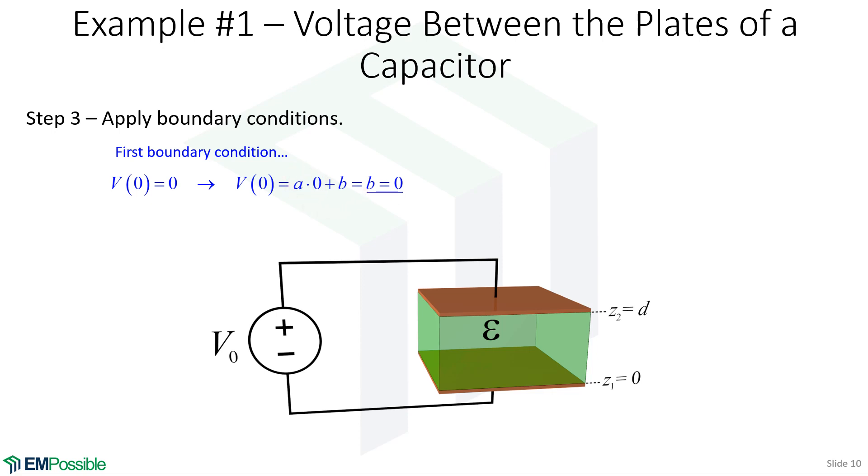We have our second boundary condition. The voltage at the top of the plate is V naught. Well, we had an AZ plus B, but we just found out that B is zero. And we put D in for the place of Z. And of course, this has to equal V naught. When we solve for the constant A, we get a V naught over D.